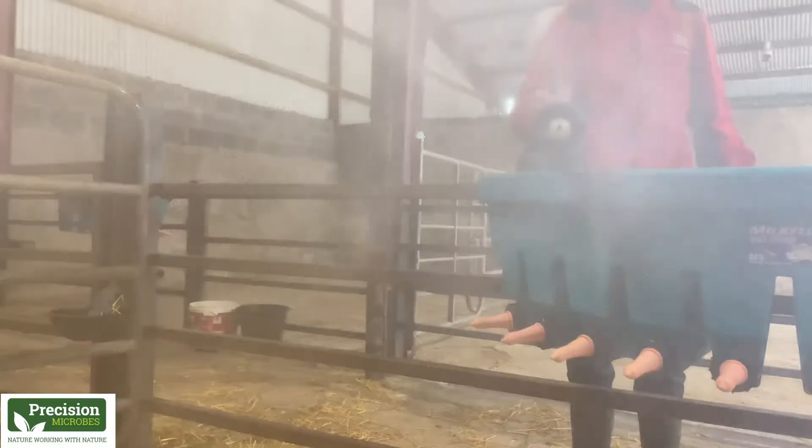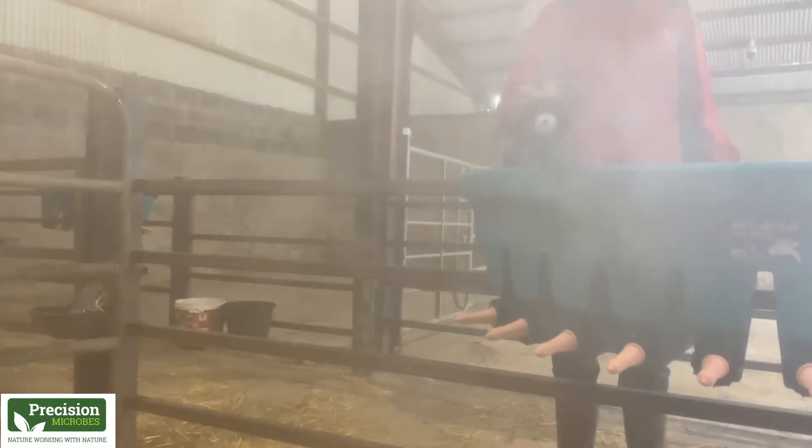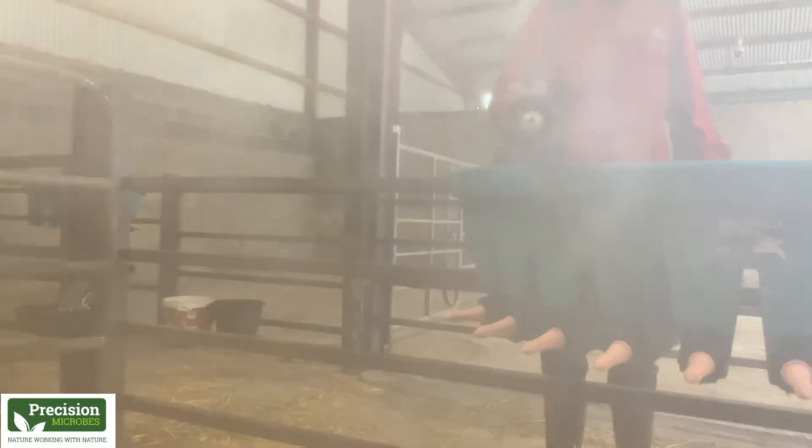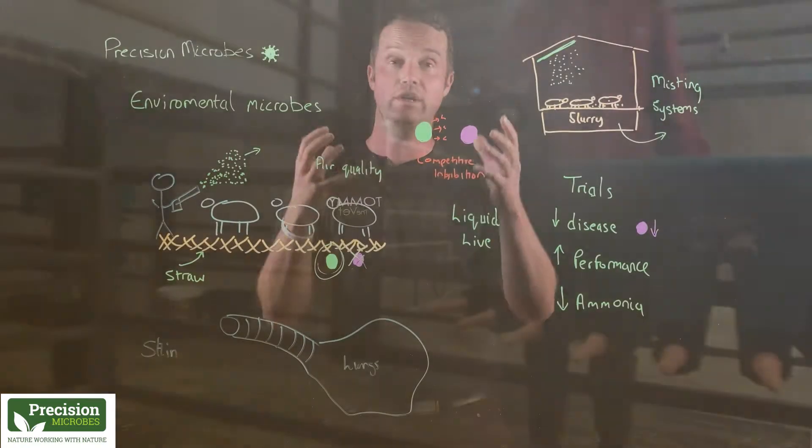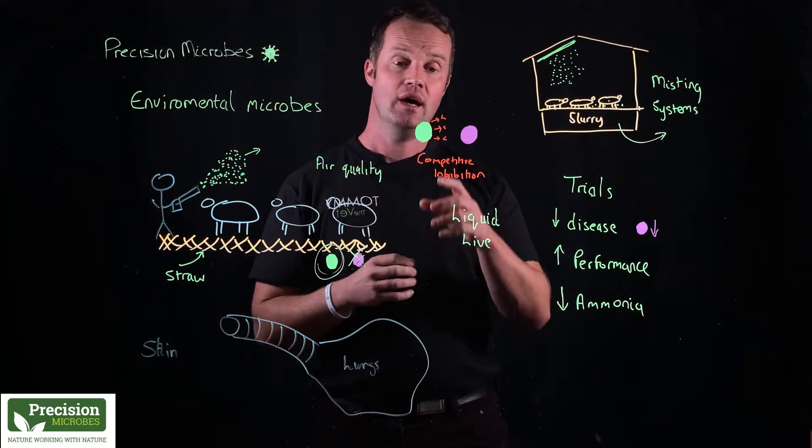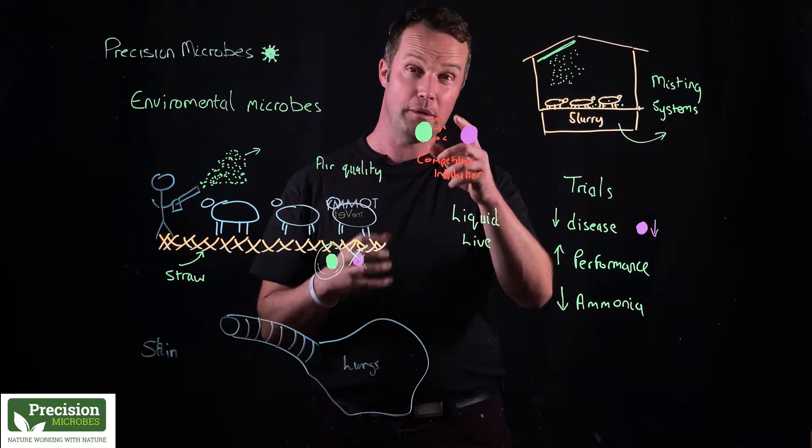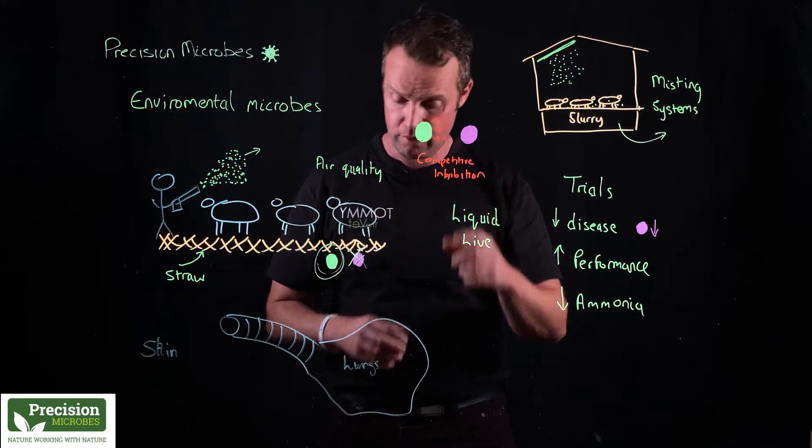What we're doing is using our liquid live lactobacillus blends for environmental microbes to control the environment that the animals are in. These lactobacillus bacteria do this by the production of lactic acid. They compete with harmful pathogens.